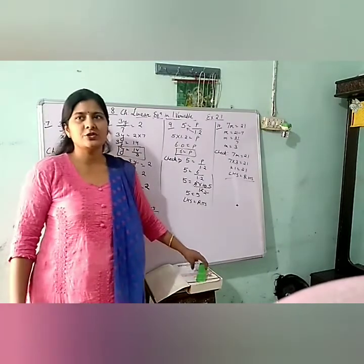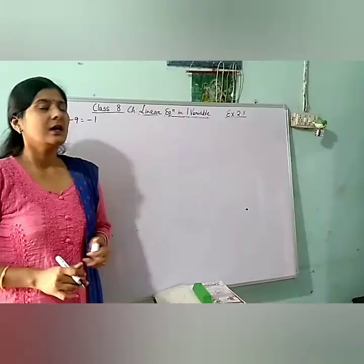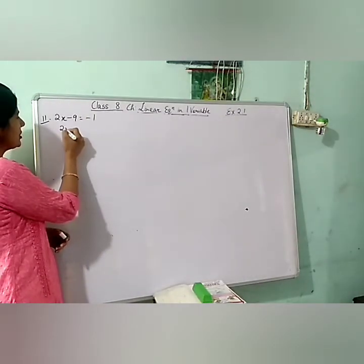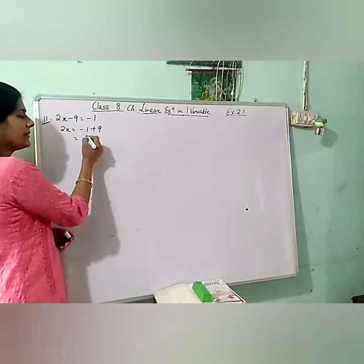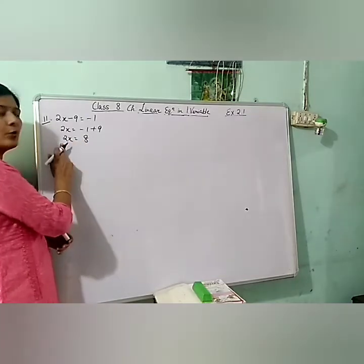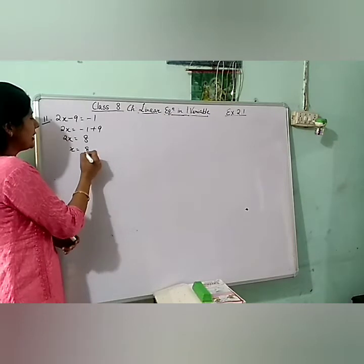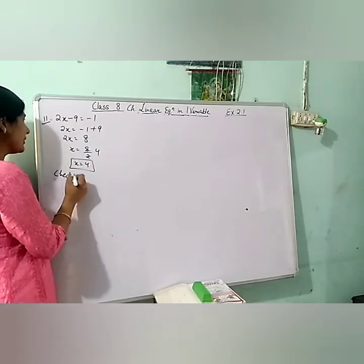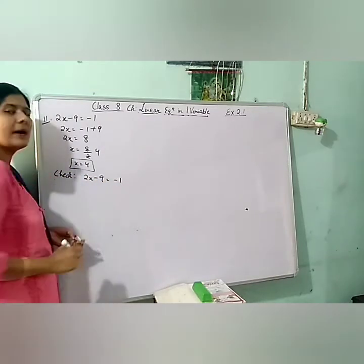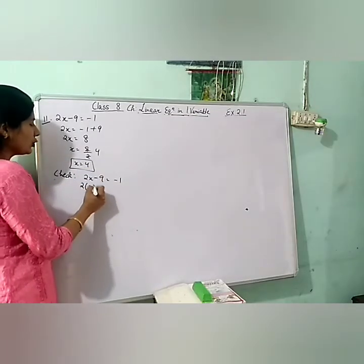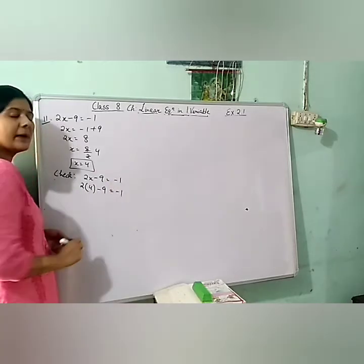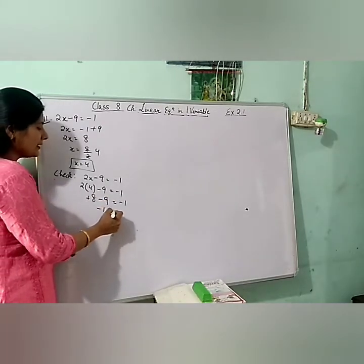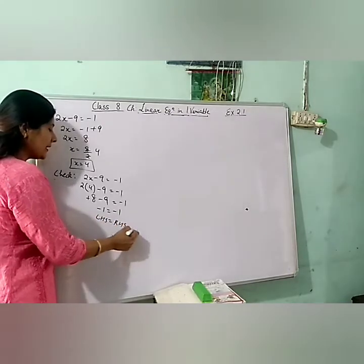Moving to question 11: 2x minus 9 equals minus 1. Taking minus 9 to the right hand side, it becomes plus 9, so we get minus 1 plus 9 equals 8. Now 2 is multiplied with x, so it goes to division: x equals 8 by 2, that is 4. Checking: 2 into 4 minus 9 equals 8 minus 9, which is minus 1 — equals RHS. LHS equals RHS, hence verified.